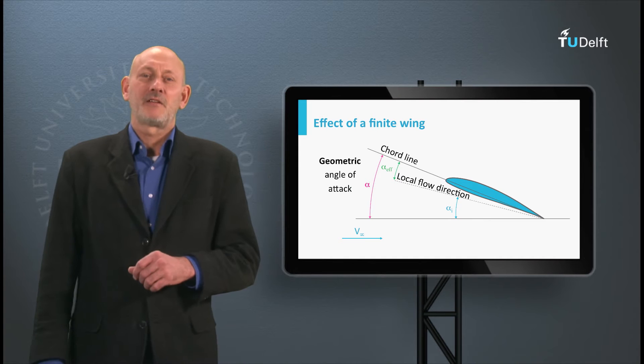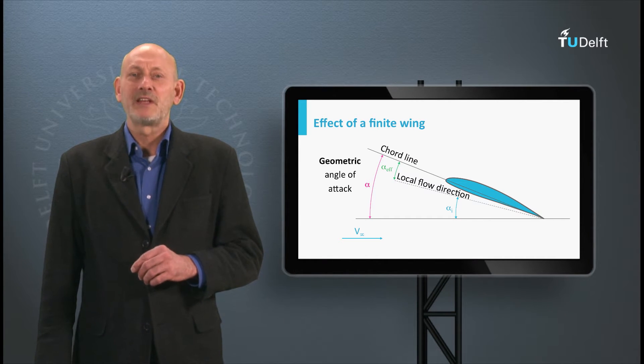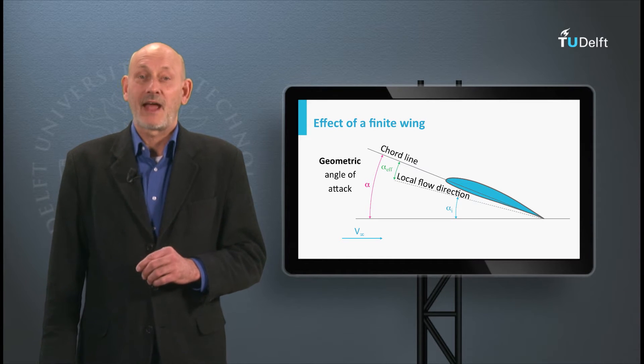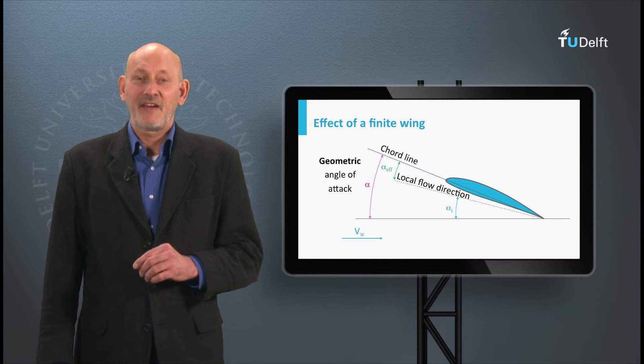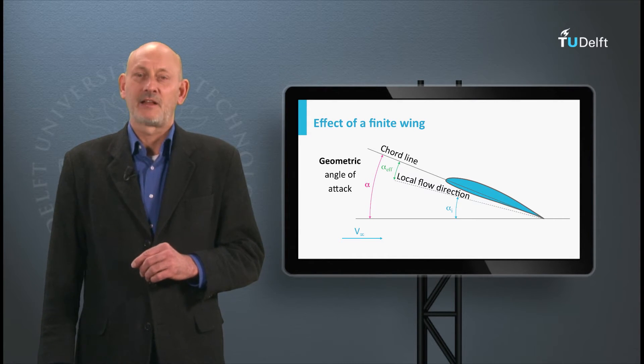Remember that we defined the induced angle of attack. Due to the downwash at the wing induced by the wingtip vortices, the airfoil in the wing doesn't see the geometric angle of attack, but an effective angle, which is the difference between the geometric angle of the wing and the induced angle of attack.